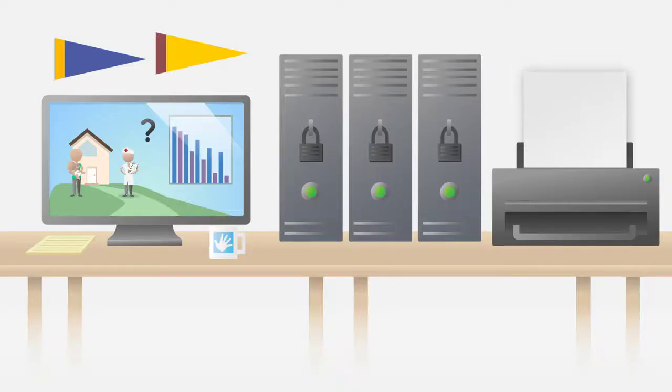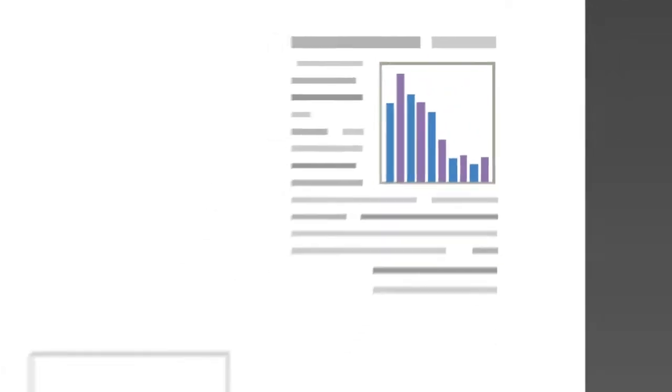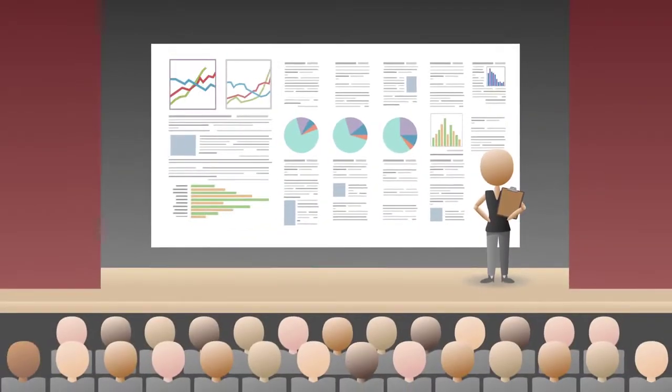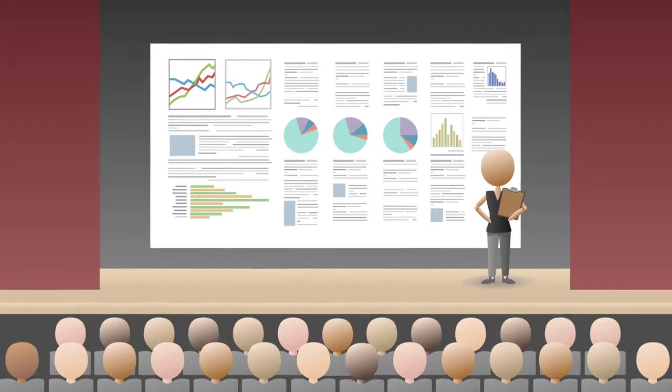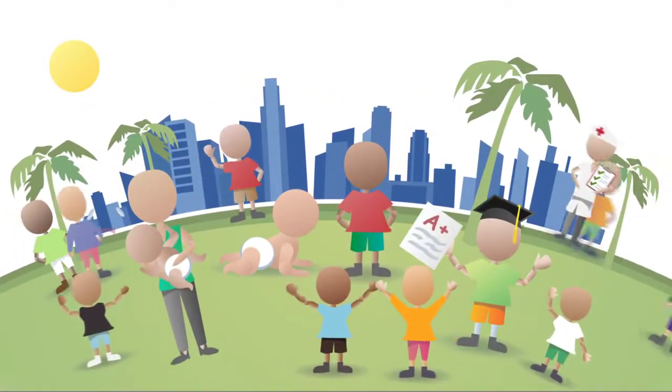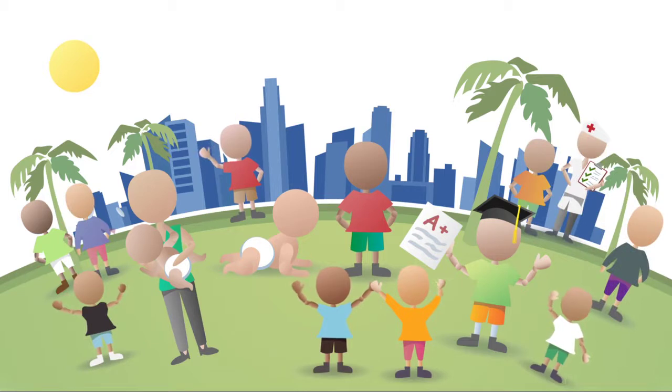Developing high-quality evidence for program and policy effectiveness is a strategy worth investing in for the long term. By making use of administrative records, the Children's Data Network can help us understand what makes our children, our families, and our communities healthier, safer, stronger.